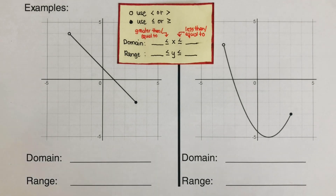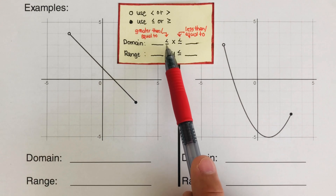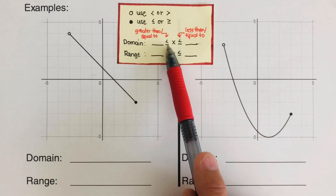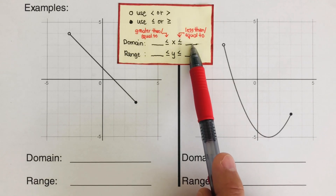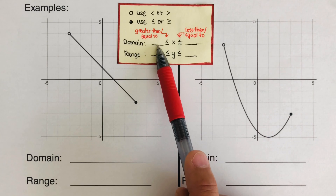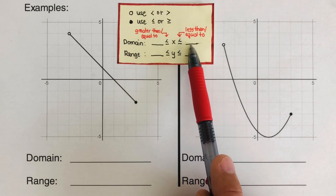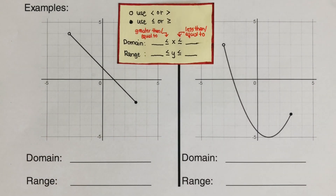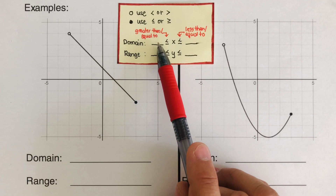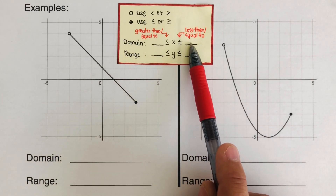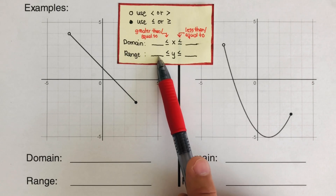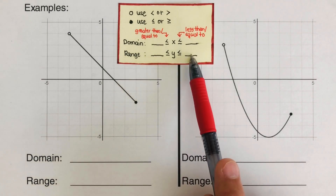To write the domain in inequality notation, we write it like this. This is read as greater than or equal to, and this one is read as less than or equal to. So this would be: x is greater than or equal to whatever the left boundary value is, and x is less than or equal to whatever the right boundary value is. For the range, we have y is greater than or equal to the bottom boundary, and less than or equal to the top boundary.